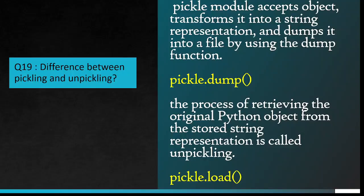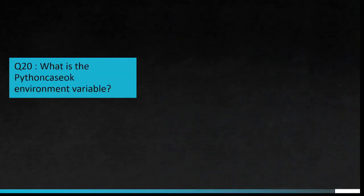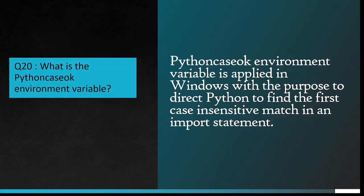Pickle module accepts an object, transforms it into a string representation, and dumps it into a file by using the dump function, pickle.dump. The process of retrieving the original Python object from the stored string representation is called unpickling, pickle.load. Question number 20: What is the Pythoncaseok environment variable?